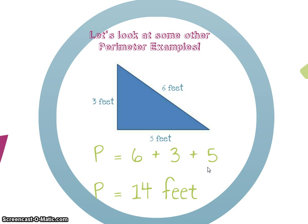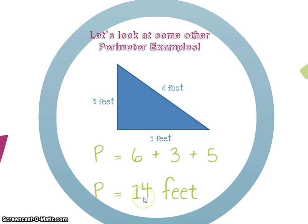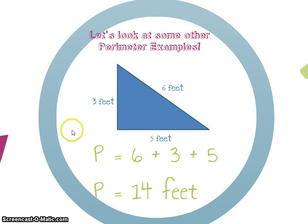Let's look at another example of perimeter, because perimeter is not just limited to rectangles. I could also find the perimeter of this triangle, and it's simply done the same way. I look at how long each of my sides are and simply add them up. So six plus three plus five equals 14 feet — that tells me how long this triangle is all the way around the outside edge.